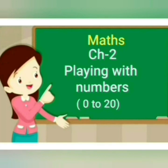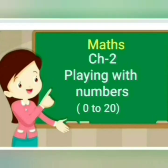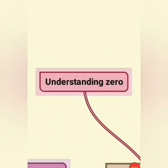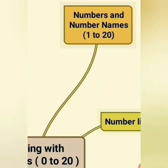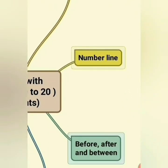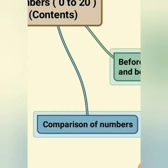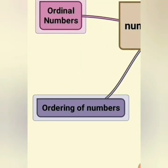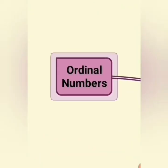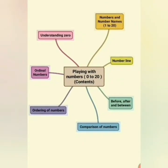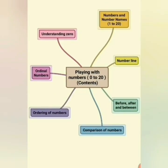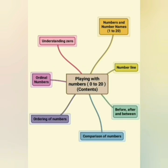Now, let us see what topics we are going to cover in this chapter. Understanding 0, Numbers and number names 1 to 20, Number line, Before after and between, Comparison of numbers, Ordering of numbers, And ordinal numbers. In this video, I will explain these topics with examples and exercises, so that at the end, you can solve the questions related to this chapter. Now, let us start with our first topic.